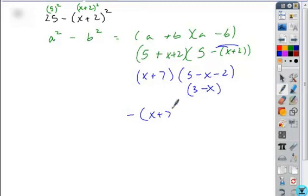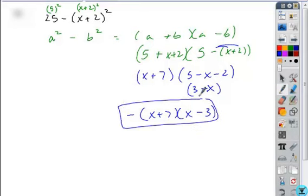Out front, the x plus 7 stays, and then you change the sign and order of these terms. So you factor out a negative from this 3, becomes a negative 3. Factor out a negative from the negative x, becomes a positive x. And so you wind up with this form.